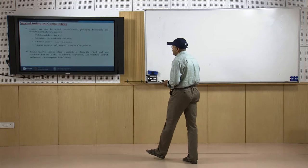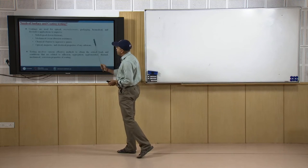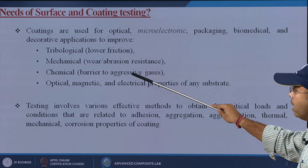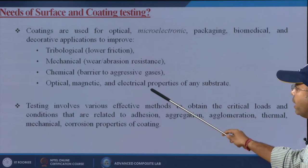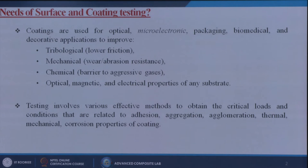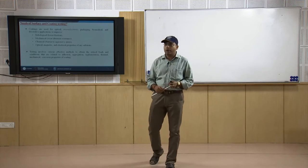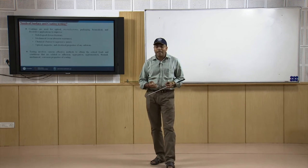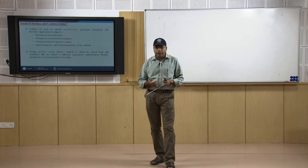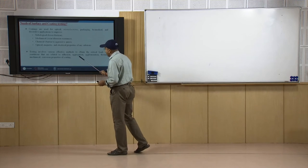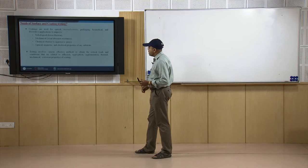Coatings are used for optical, microelectronics, packaging, biomedical, and decorative applications to improve tribological properties like lower friction, mechanical properties, wear and abrasion resistance, chemical barrier to aggressive gases, and the optical, magnetic, and electrical properties of any substrate. Testing involves various effective methods to obtain the critical loads and conditions related to adhesion, aggregation, agglomeration, thermal, mechanical, and corrosion properties of coatings.